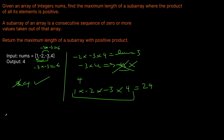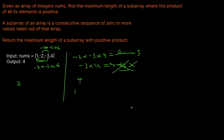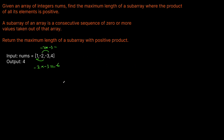That's really all you need to do for this problem — you need to figure out how long your subarray is at any point that you have a positive product. The trick to this question is that you need to keep track of positive lengths and negative lengths, because when two negatives are multiplied together you can actually get a positive. So we'll need to keep track of our positive lengths and our negative lengths and use that to update our solution.